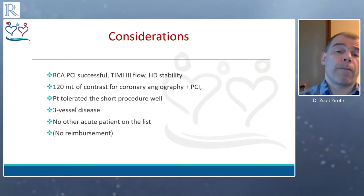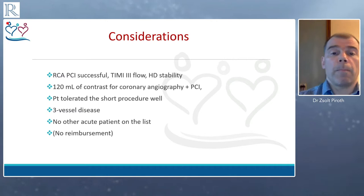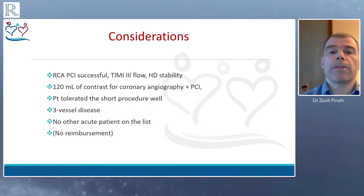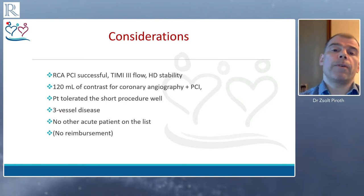The considerations in our case: we performed successful right coronary primary PCI with TIMI-3 flow and hemodynamic stability. We spent only a couple of minutes doing so and used only 120 mL of contrast for the angiography and PCI. The patient tolerated the procedure very well — this is very important, because all the trials and evidence we have pertain to such patients. On the other hand, she has three-vessel disease, and importantly there was no other acute patient on the list, so we had the time to go on if we chose to.